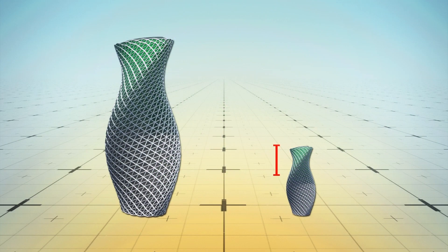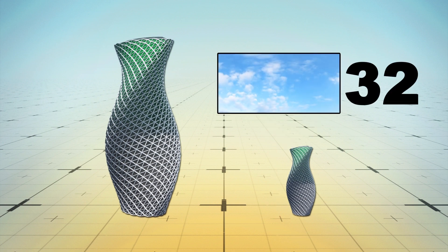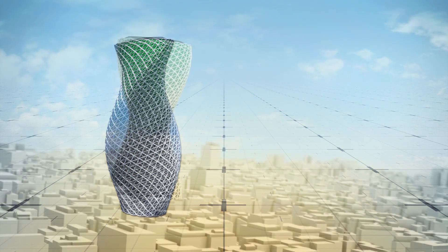The architects claim the smaller iteration of the Aura Tower with a height of 18 meters could clean 32 million cubic meters of air per day.